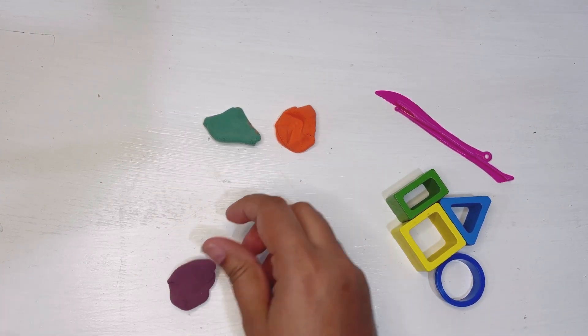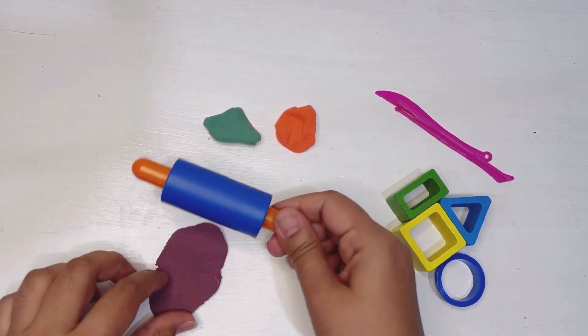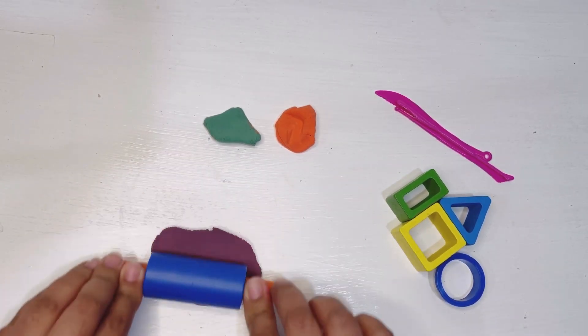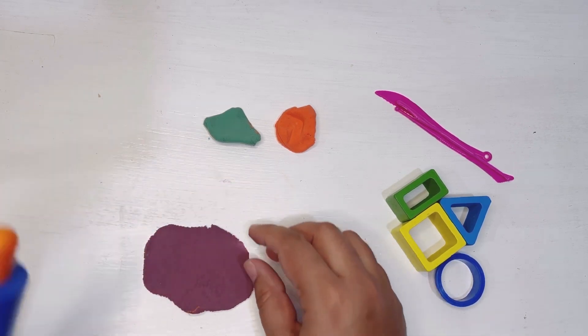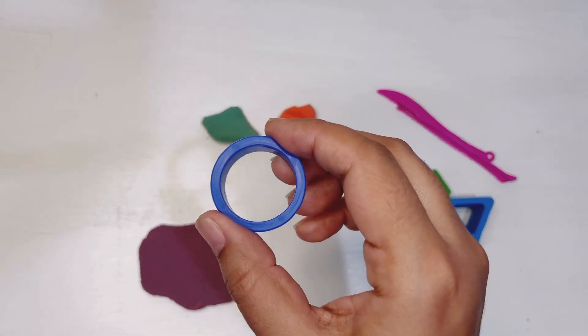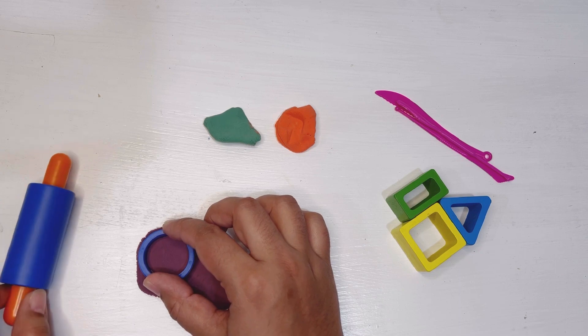We will use a rolling pin to flatten it. Roll, roll, roll, just make it flat and then we'll make shapes with it. Here you go, we made this flat. Now let's choose a shape. Here's circle, let's make a circle with this purple play-doh.